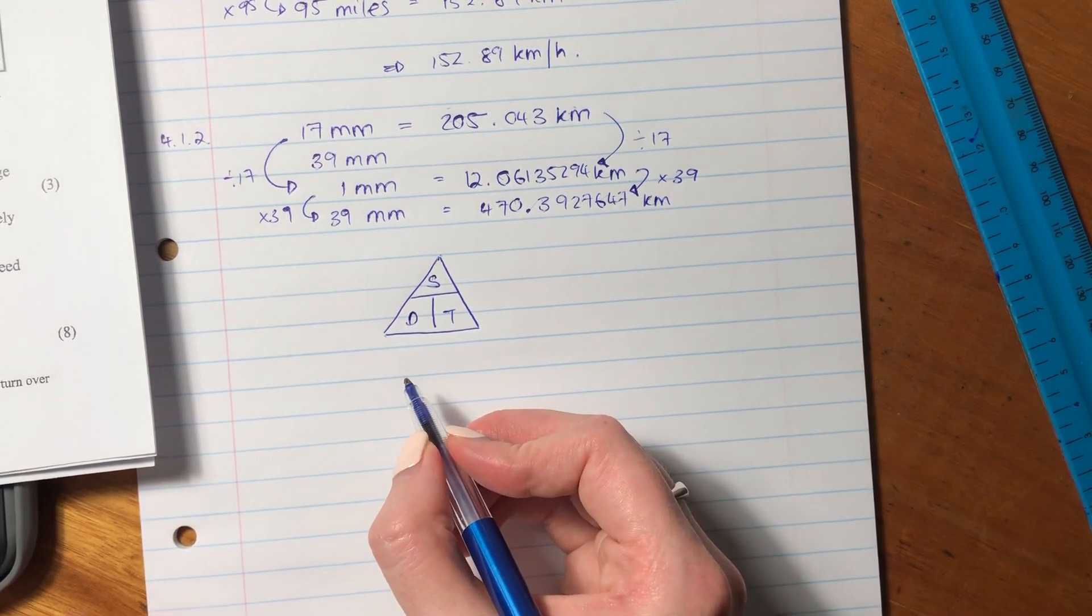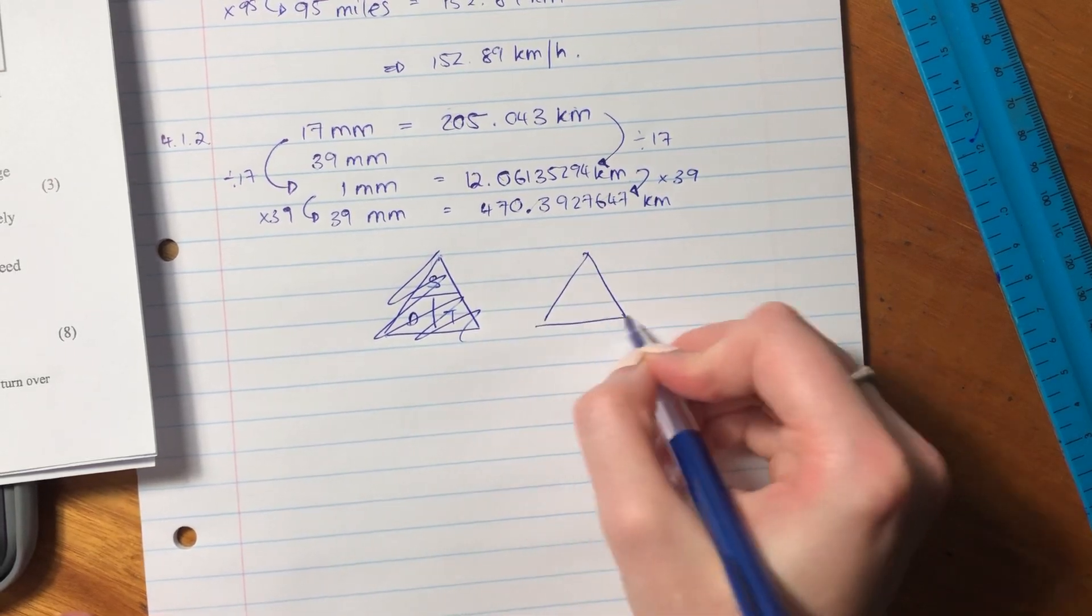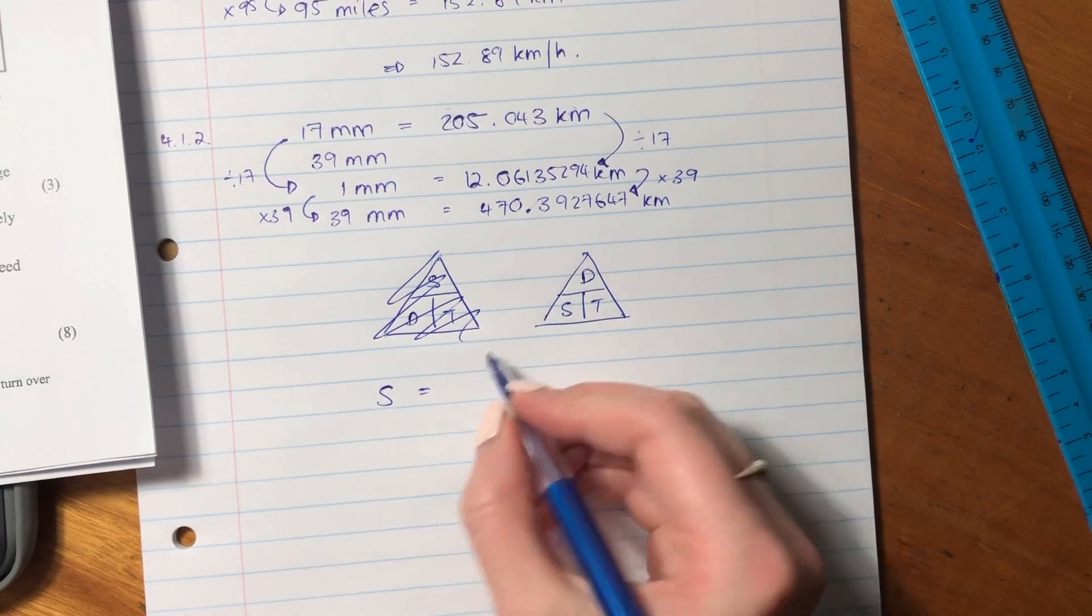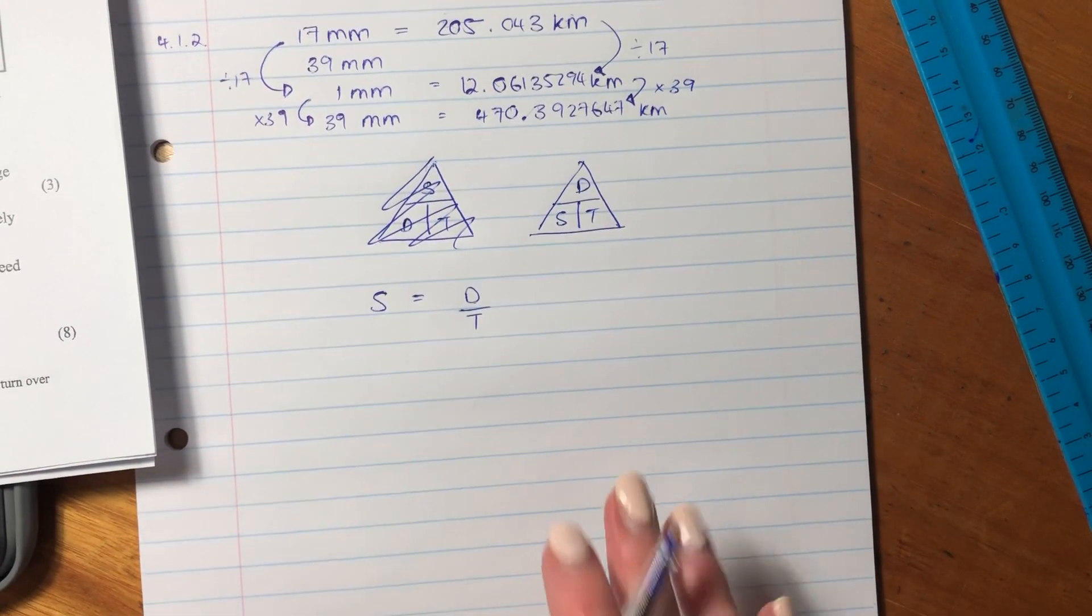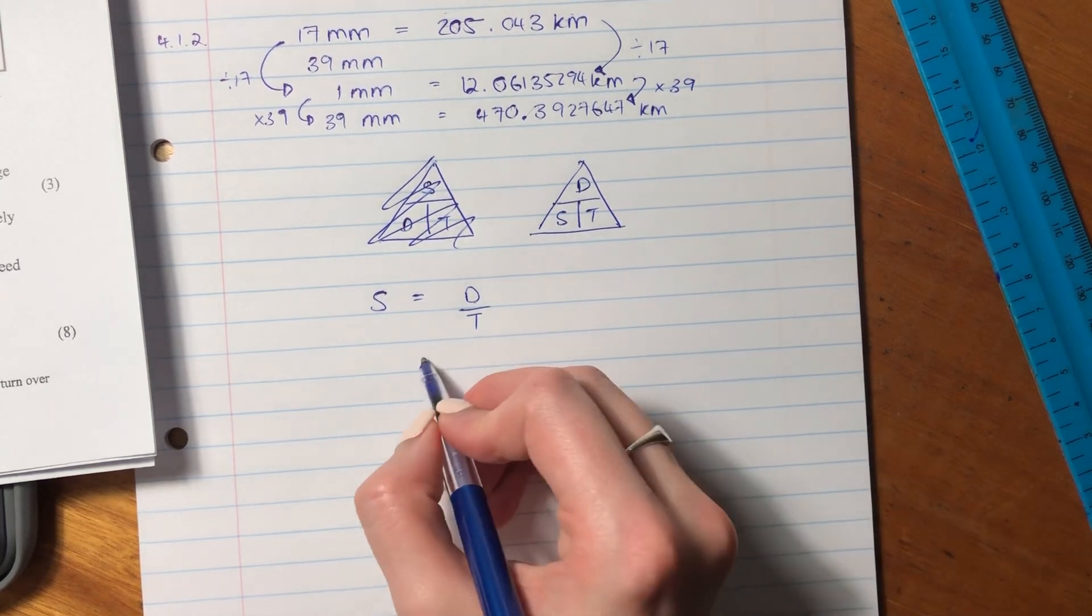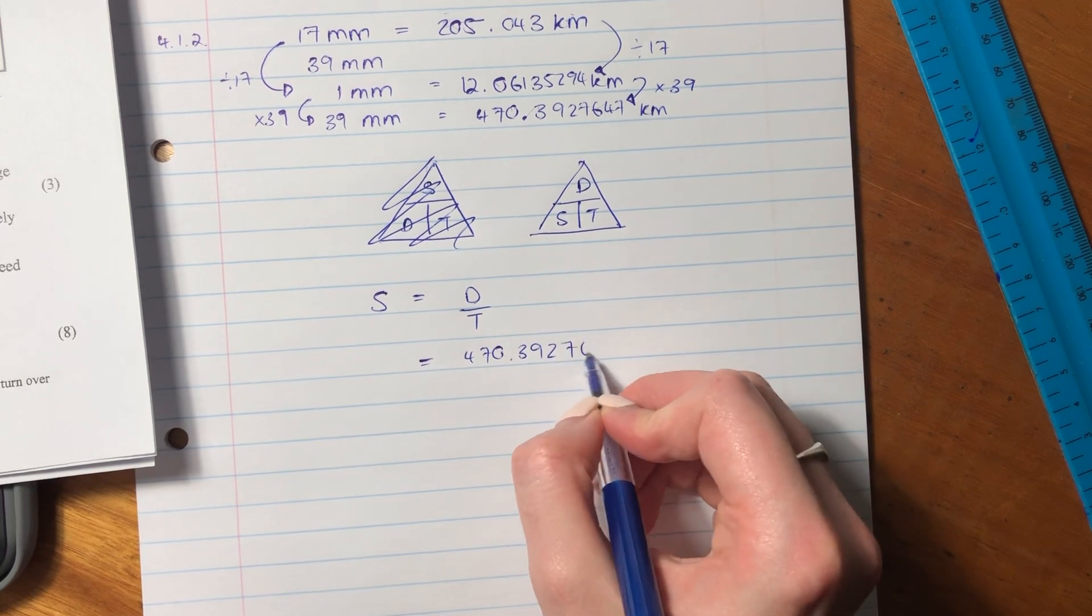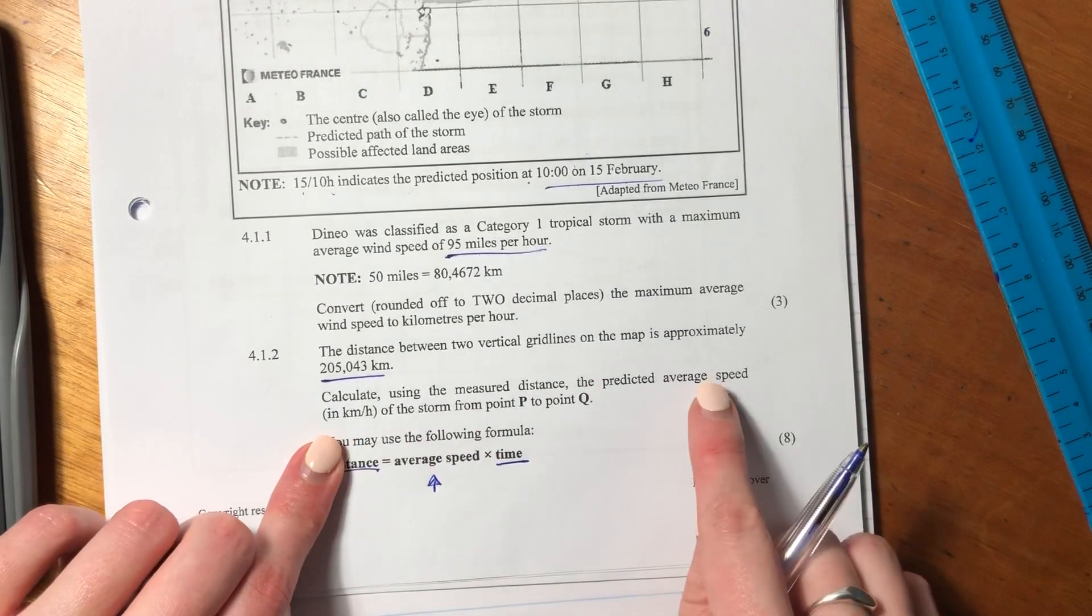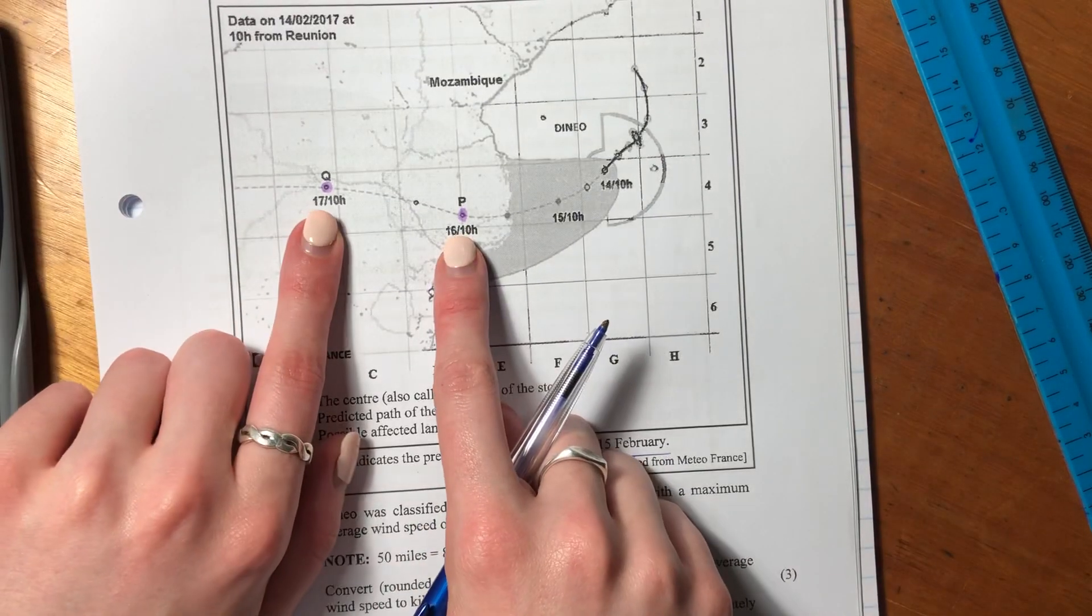We know that speed equals distance times time. Sorry, that's not right. It's like this. It's distance at the top. So now we want speed. So speed is going to equal distance over time. So that's what we're going to put. So what we have is we have our distance. We've just calculated our distance between these two points. And now let's think what our time is. So it's asked for our average speed in kilometers per hour. So what is the time difference between P and Q?